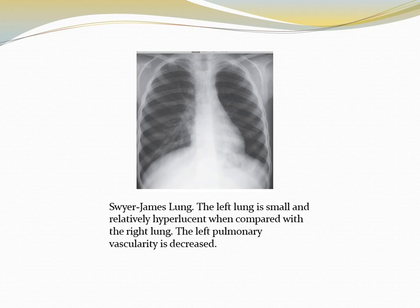Prior history of viral infection and age group are important clues. On expiratory X-ray there is little change. The hypoplastic lung should show no air trapping because it is small, but on expiratory view it shows only a little change, confirming the diagnosis.